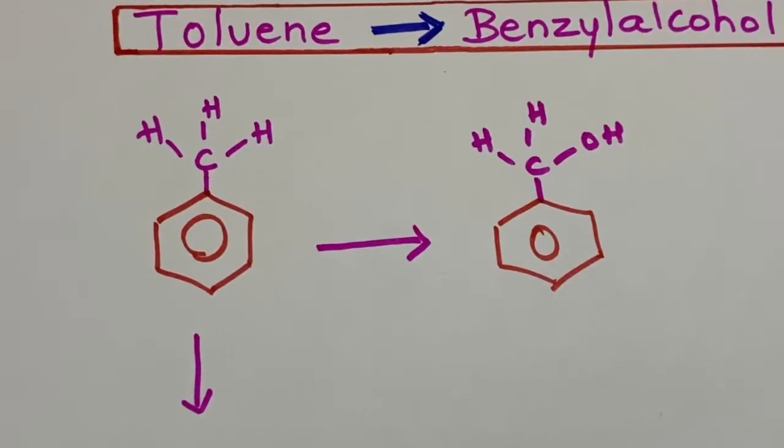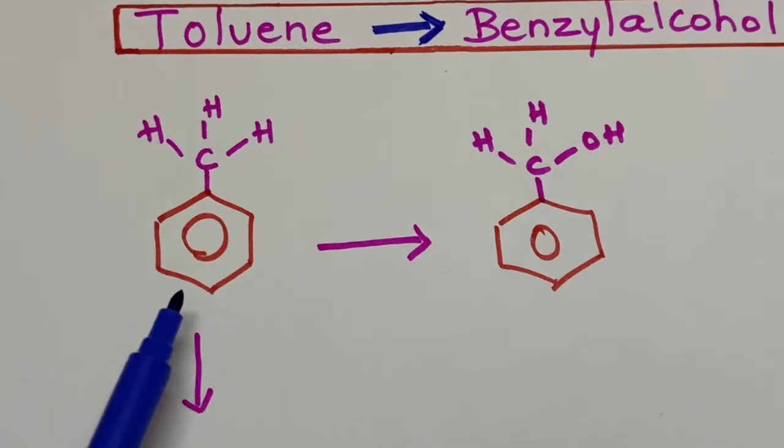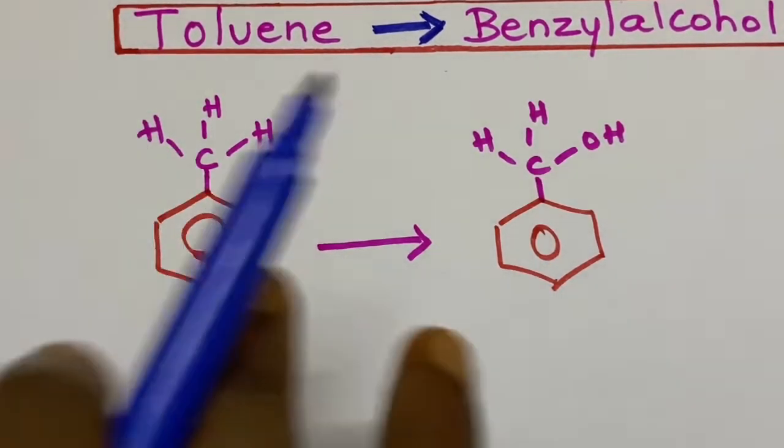Hi students, in today's class we are going to see how to convert toluene to benzyl alcohol. So first of all write the structure of toluene and benzyl alcohol and analyze what has happened.